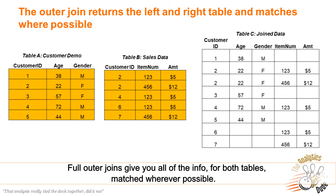And finally, full outer joins give you all of the info for both tables, matched where possible.